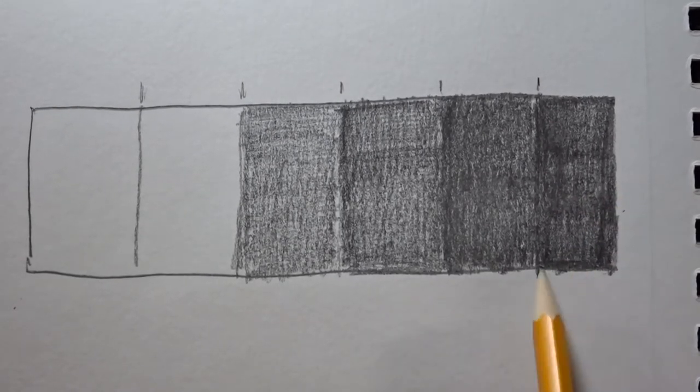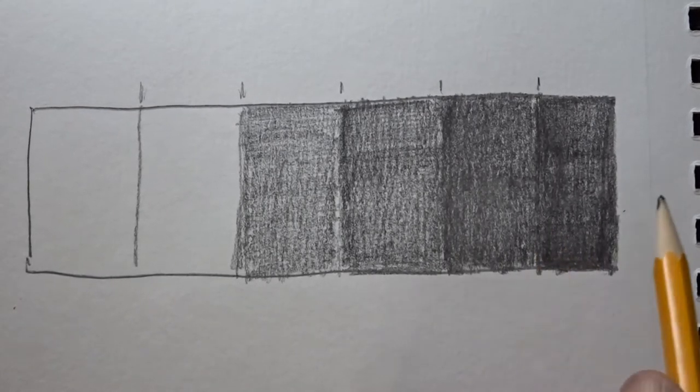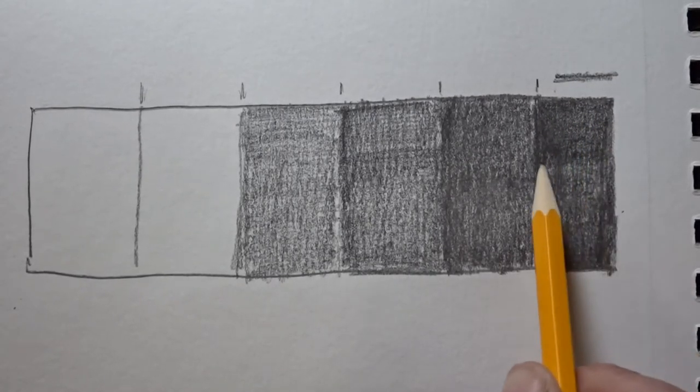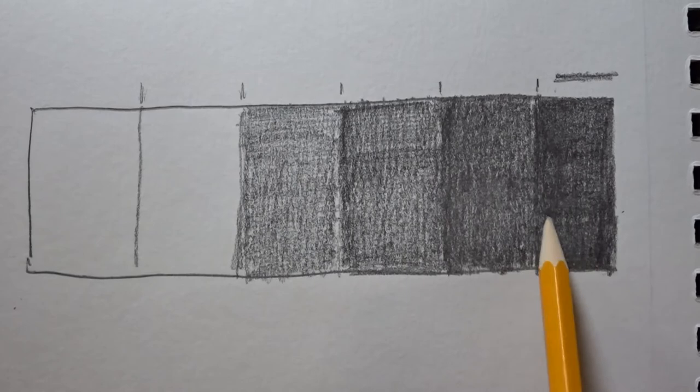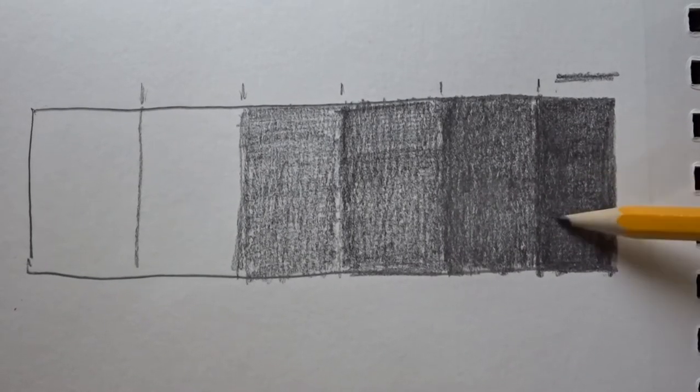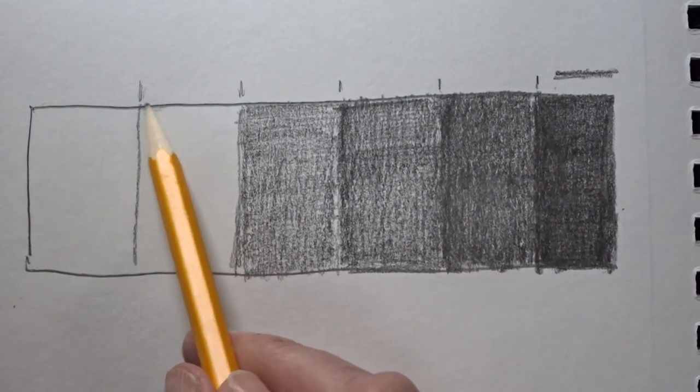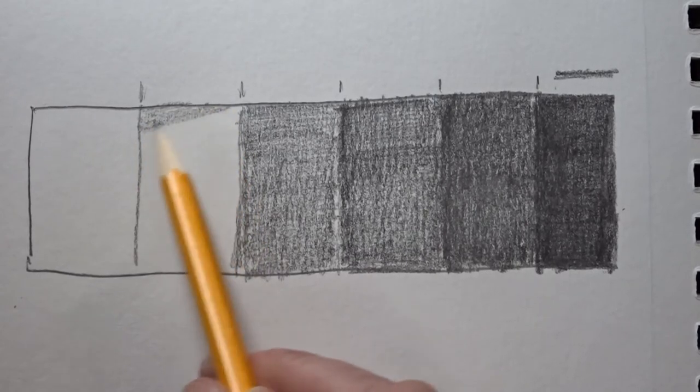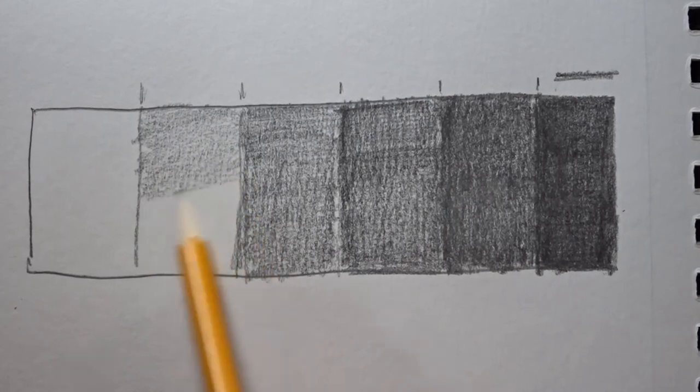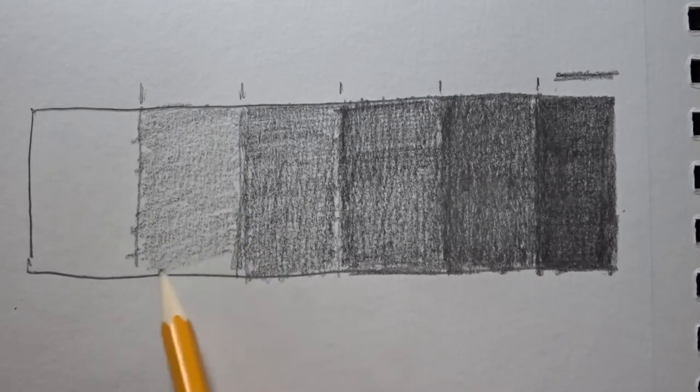So now when I go to my lighter values, I hold my pencil a little further away from the tip. And I lay in my values very lightly. So I'm going to move now to the lighter values. Move my hand away from the tip of the pencil. And very lightly hit that. And I want to make sure I'm going lighter than the one before it. Nice even steps.